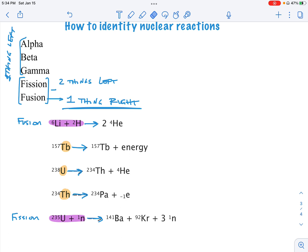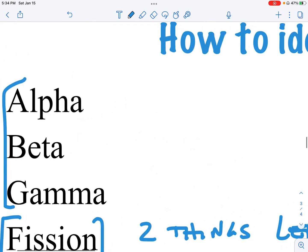I mean, you can pick any of these that you want. Honestly, I'll just start from the top, alpha. I have my personal favorites, I guess. But alpha in the products, so on the right-hand side, you're going to get, you always, always, always have a 4-2 helium, because that's considered an alpha particle.